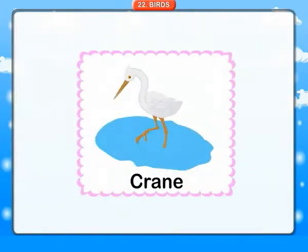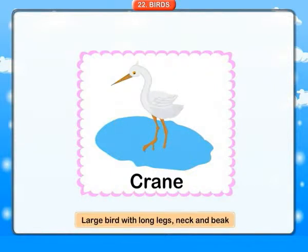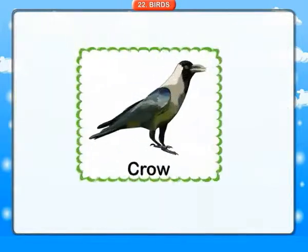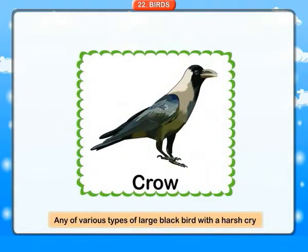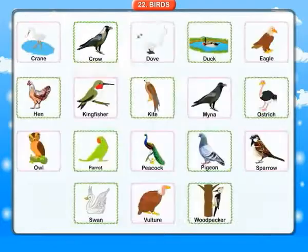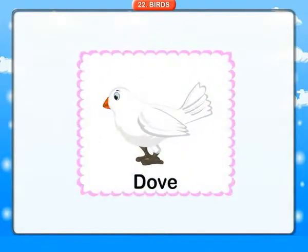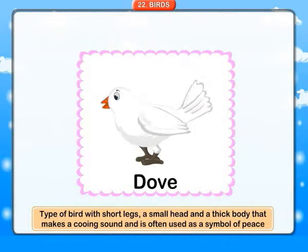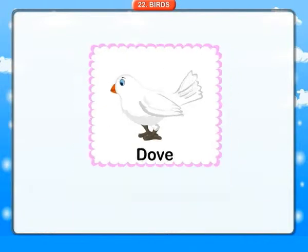Birds. Crane: a large bird with long legs, neck and beak. Crow: any of various types of large black bird with a harsh cry. Dove: a type of bird with short legs, a small head and a thick body that makes a cooing sound, often used as a symbol of peace.